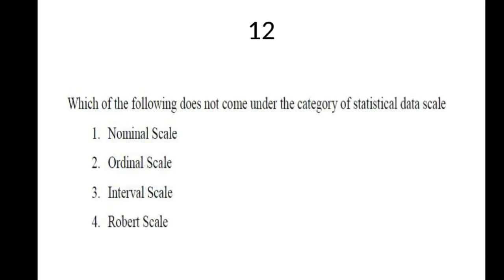Question 12: Which of the following does NOT come under the category of statistical data scale? Options: nominal scale, ordinal scale, interval scale, robot scale. The fourth option — robot scale — is the correct answer, as it is not a recognized statistical data scale.